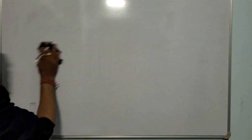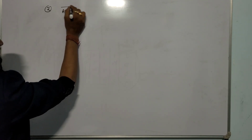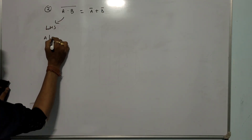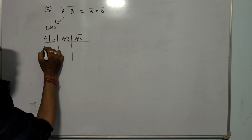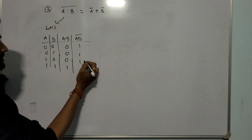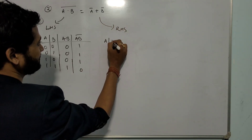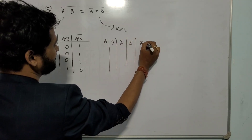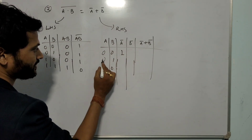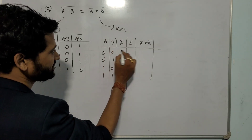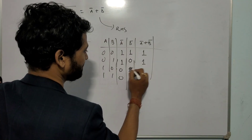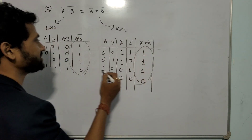For the second De Morgan theorem, (A times B) bar equals A bar plus B bar. The AND output A times B for combinations 0-0, 0-1, 1-0, 1-1 is 0, 0, 0, 1; its bar gives 1, 1, 1, 0 - the LHS. For RHS, A bar plus B bar: A bar is 1,1,0,0 and B bar is 1,0,1,0; adding gives 1, 1, 1, 0. LHS equals RHS, confirmed. This formula is useful in adder, subtractor, half adder, and half subtractor circuits.